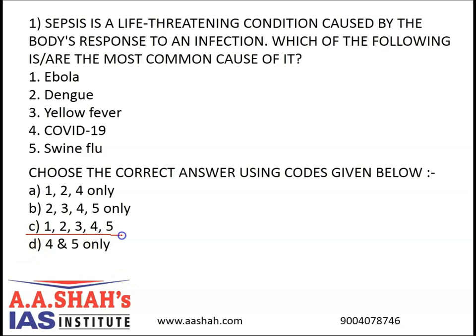The correct answer is C — 1, 2, 3, 4, 5 — all the above are true. Many types of microbes can cause sepsis including bacteria, fungi, and viruses. However, bacteria are the most common cause. Severe cases of sepsis often result from a body-wide infection that spreads through the bloodstream. The body releases immune chemicals into the blood to combat the infection. Those chemicals trigger widespread inflammation which leads to blood clots and leaky blood vessels. As a result, blood flow is impaired, depriving organs of nutrients and oxygen and leading to organ damage. In severe cases, one or more organs fail. In the worst cases, blood pressure drops, the heart weakens, and the patient spirals towards septic shock. Once this happens, multiple organs like lungs, kidneys, and liver may quickly fail and the patient can die.